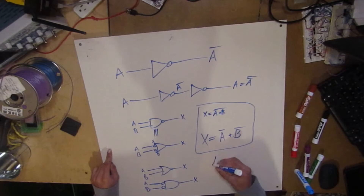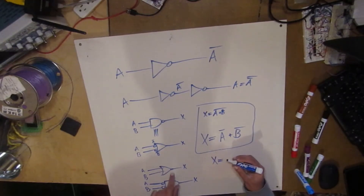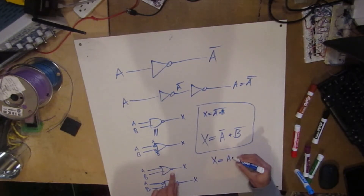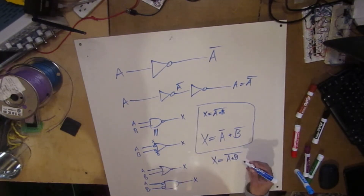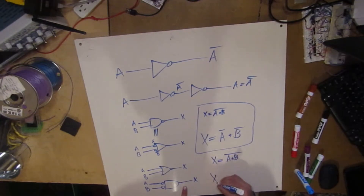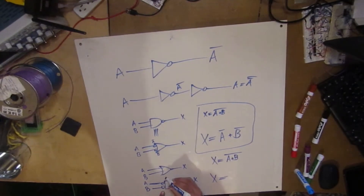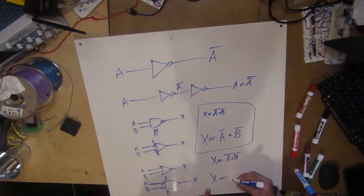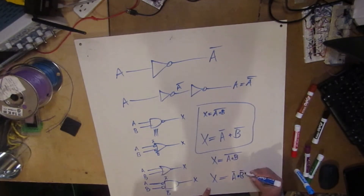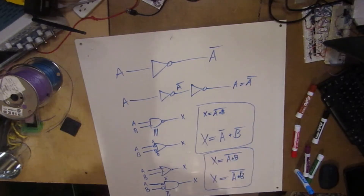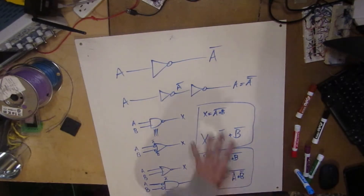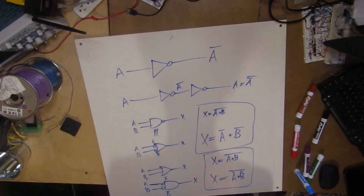So let's write this in Boolean algebra. We have X is equal to A plus B, all bar. And this says that X is equal to A bar and B bar, all barred — these guys are the exact same. So this is De Morgan's Theorem represented using Boolean algebra.